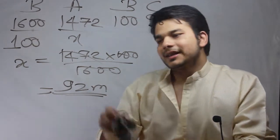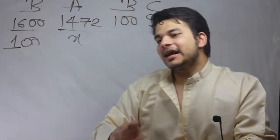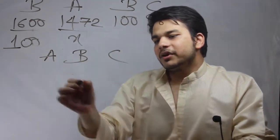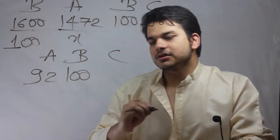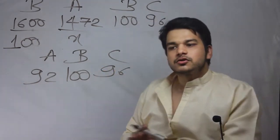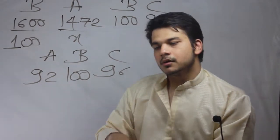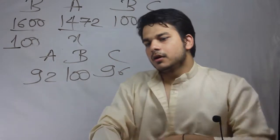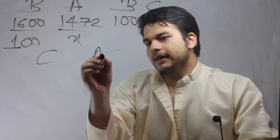That means in a race between A, B, and C over 100 meters: B will run 100 meters, A will run only 92 meters, and C will run 96 meters. From this it is clear that C is going to win the race between A and C.